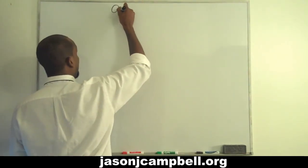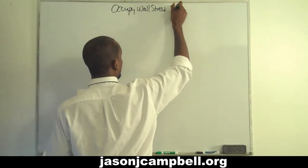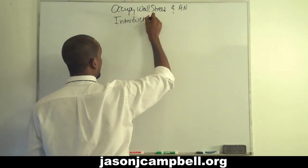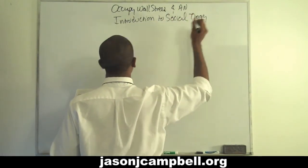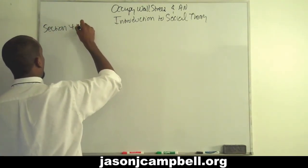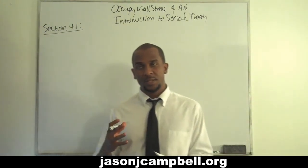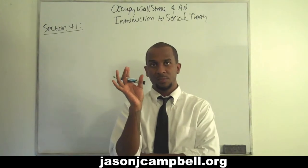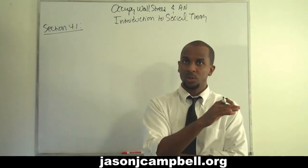So this is Occupy Wall Street and an Introduction to Social Theory, and this is section 4.1. The first sense of the analysis is an attempt to recognize, conceptually, the attempt to recognize privilege within a social movement.